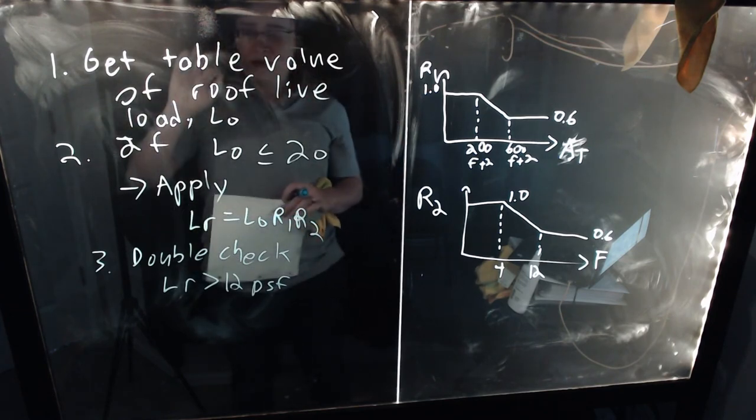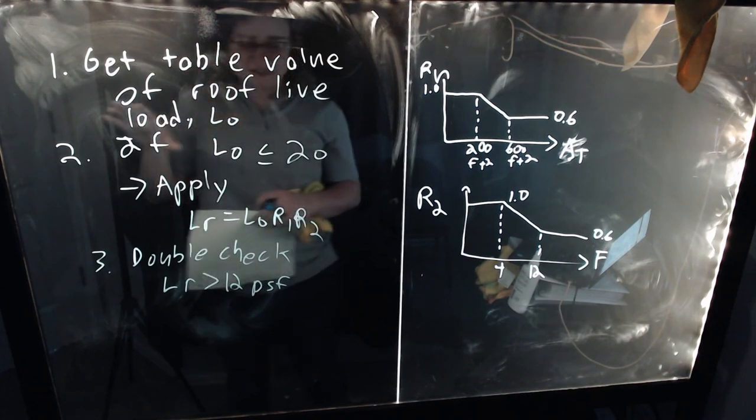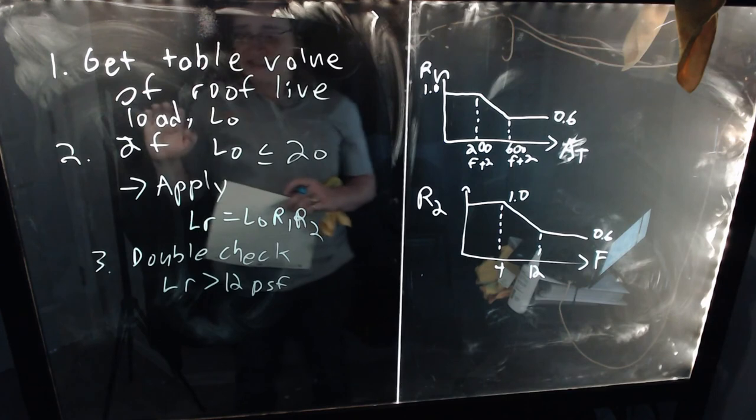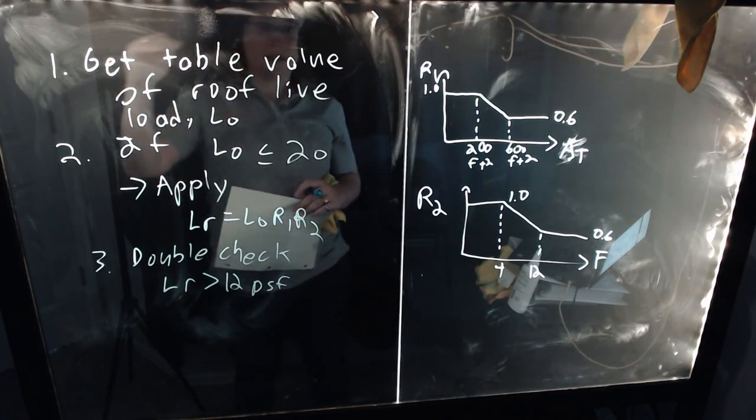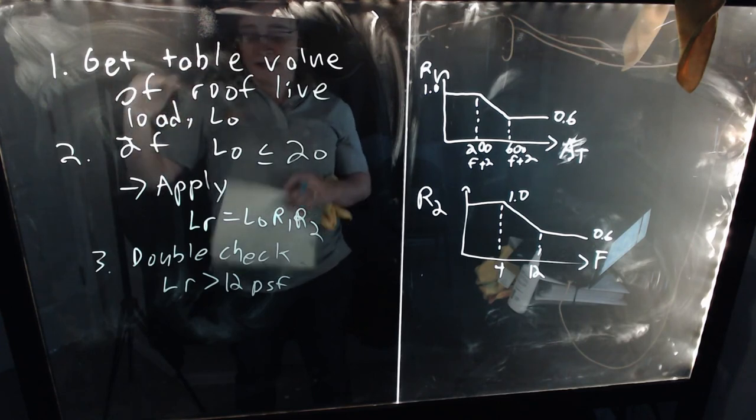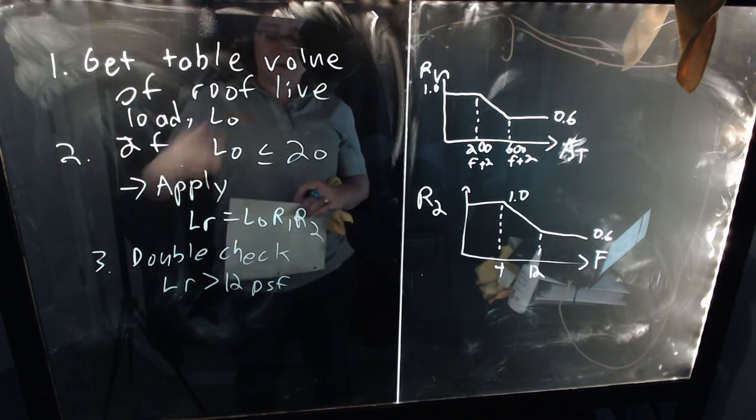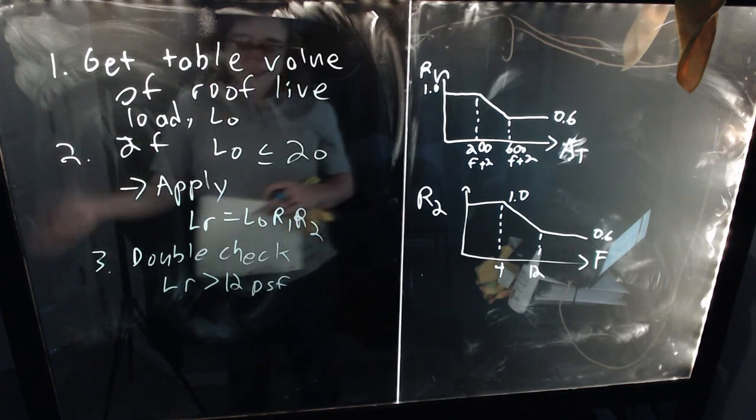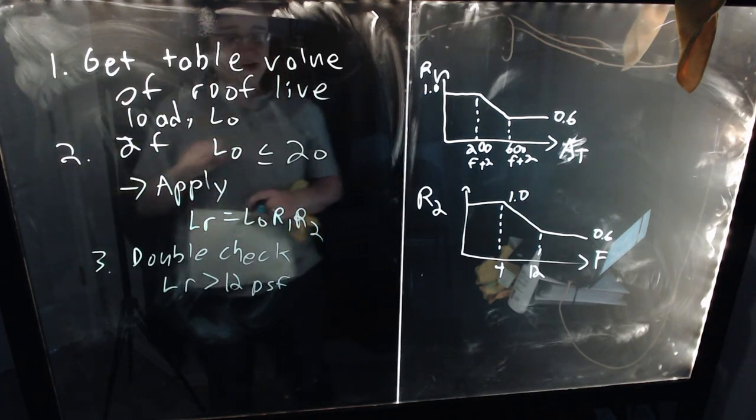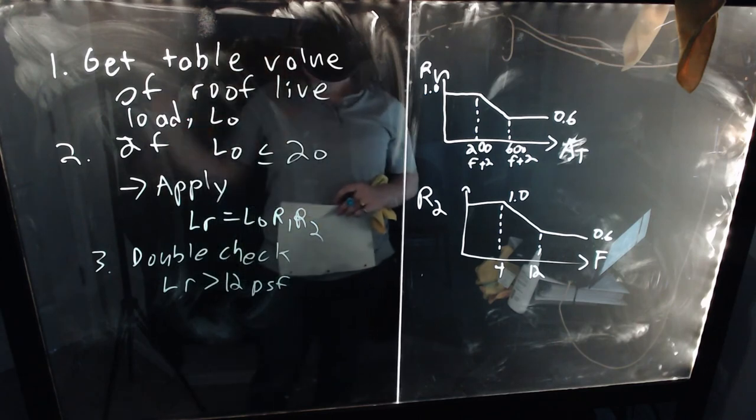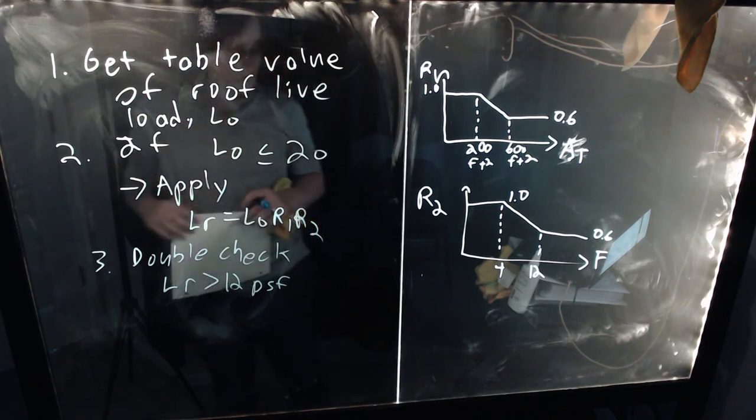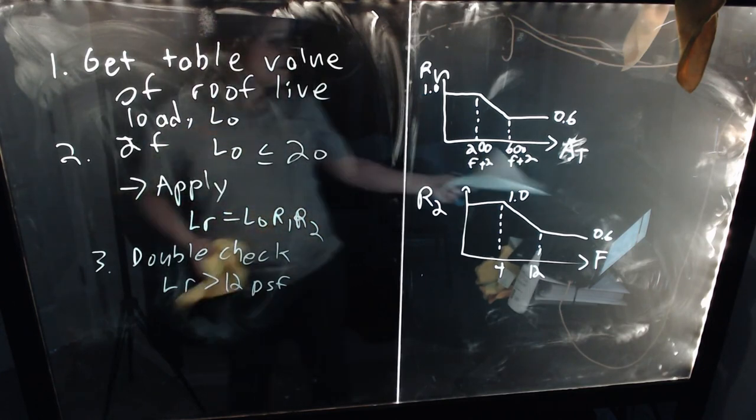So, these provisions apply to most structures, especially most smaller structures, houses, and that kind of thing. But, so again, you first get your roof live load value. Then you see if you're less than 20 PSF, pounds per square foot. But if you are, you apply our roof live load reduction equations, and then double check if, at the end, double check to make sure that your LR value is not going below the minimum value of 12 PSF. And if you do have a roof that is greater than 20, there are other provisions in chapter four to deal with those.